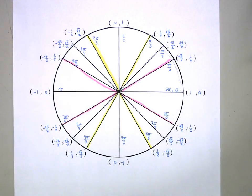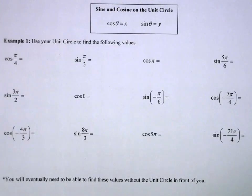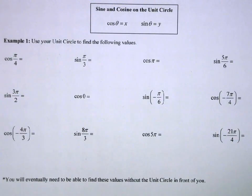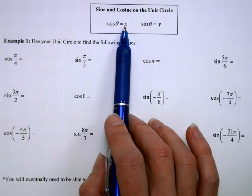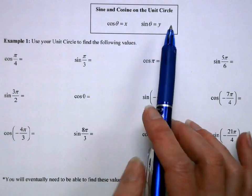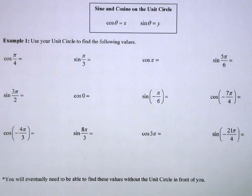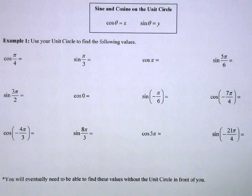This is something you need to have memorized and be able to visualize — that's what we're working on. The unit circle contains the sine and cosine values for all of those different angle measures. The cosine is the x-coordinate and the sine is the y-coordinate, because when we have a unit circle the x and y values are the cosine and sine respectively.